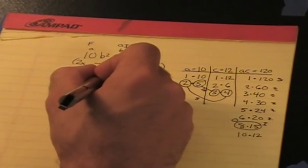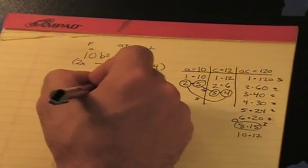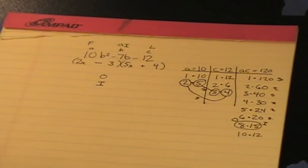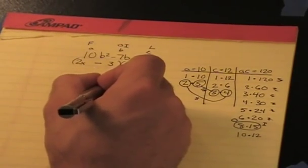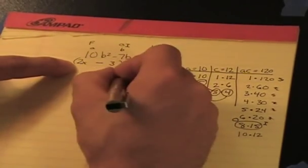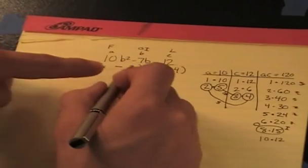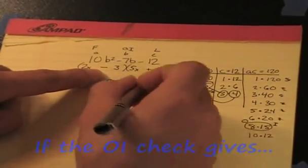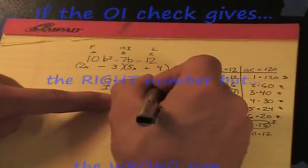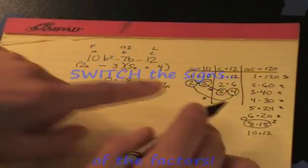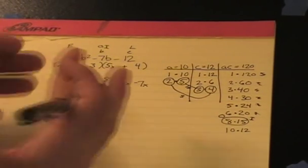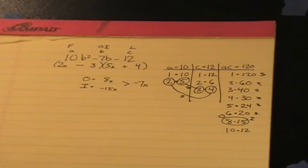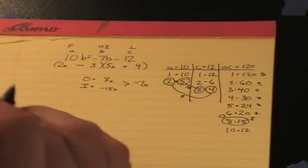All we need to do is an OI check to make sure we are right. And we do this every single time because I make mistakes, you make mistakes, and sometimes they give us prime trinomials that you can't factor. So you always have to OI check. So O is equal to, let's see, 2x times 4, that's 8x. Inner is negative 15x. Combine them and we get our negative 7x. First try. Took a little bit of scratch work over here, but for those of you who don't want to do guess and check over and over and over, the AC method is fantastic. It's just a process. You don't want to write these steps down a few times.